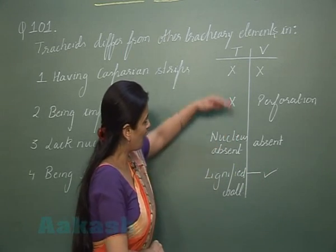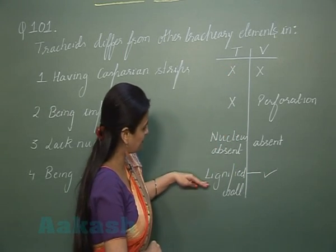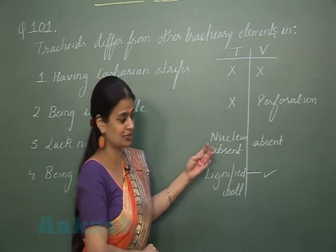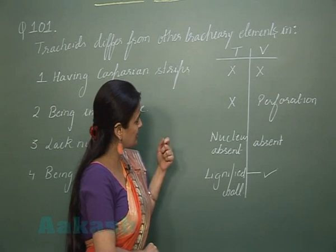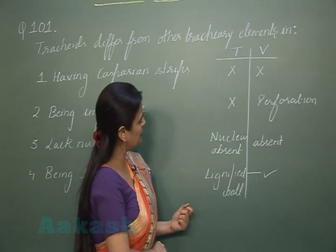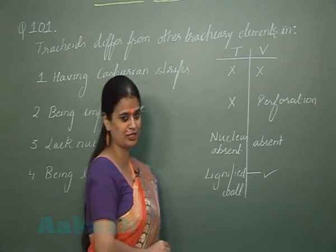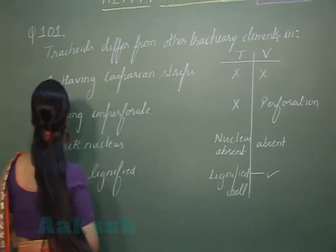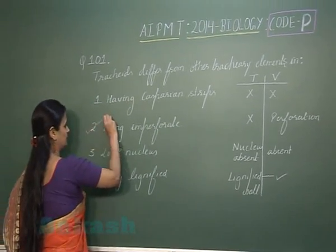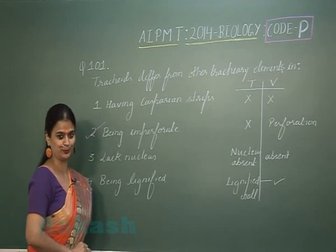All the features mentioned are the same in both tracheids and vessels except one — the differentiation is with respect to the perforation. So the right answer here is option number two.